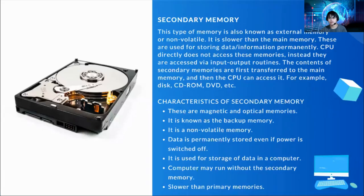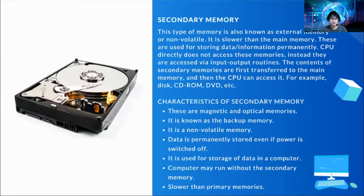Next, we have secondary memory. The secondary memory is also known as external or non-volatile memory. It is slower than the main memory. These are used for storing data or information permanently. The CPU does not directly access this memory; instead, they are accessed via input-output routines. The contents of secondary memory are first transferred to the main memory and then the CPU can access it. Examples include disk, CD-ROM, DVD, flash drives, and floppy disk.